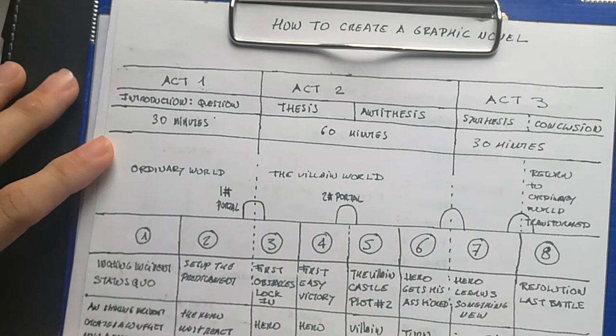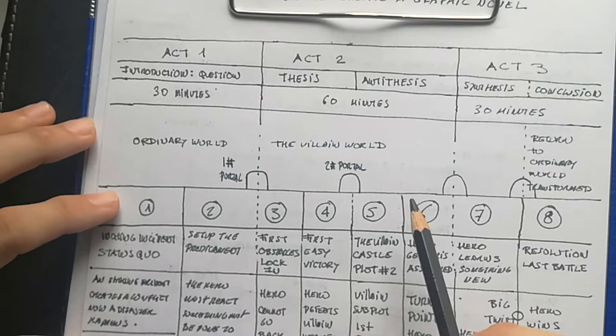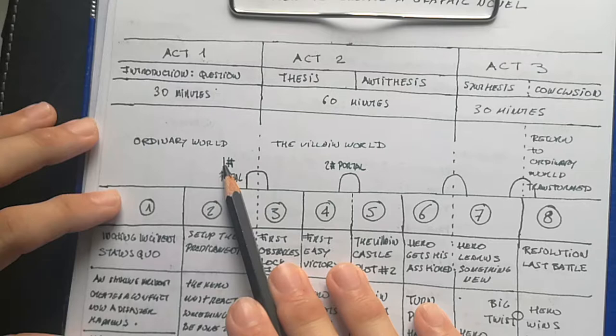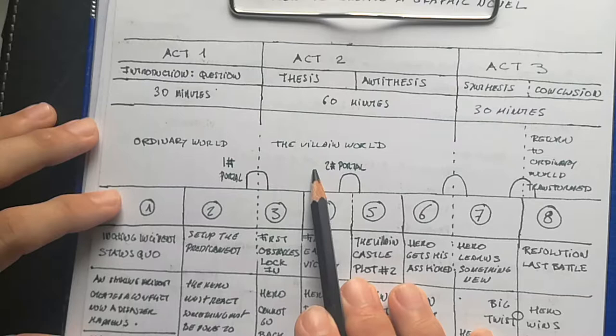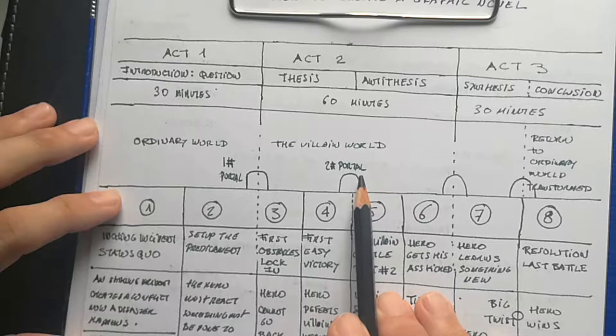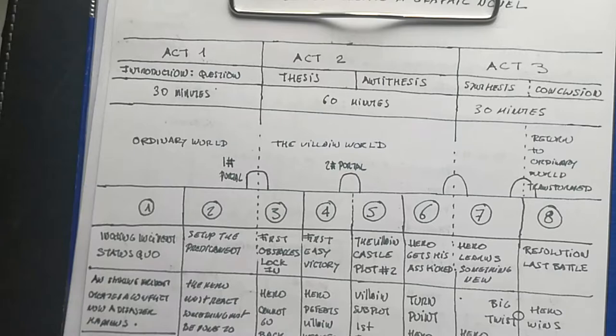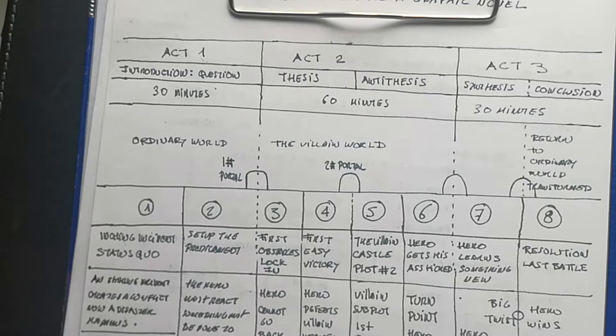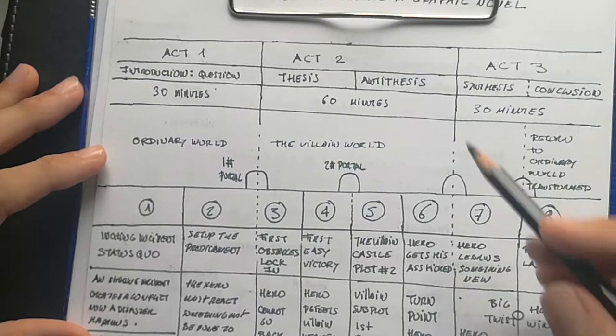Through the story, the character crosses physical or conceptual portals — first from the ordinary world to the new world, and then deeper into that new world, into the villain's castle. The villain is already established in that world, ruling it, and has a base or castle that is an extension of their will and power.